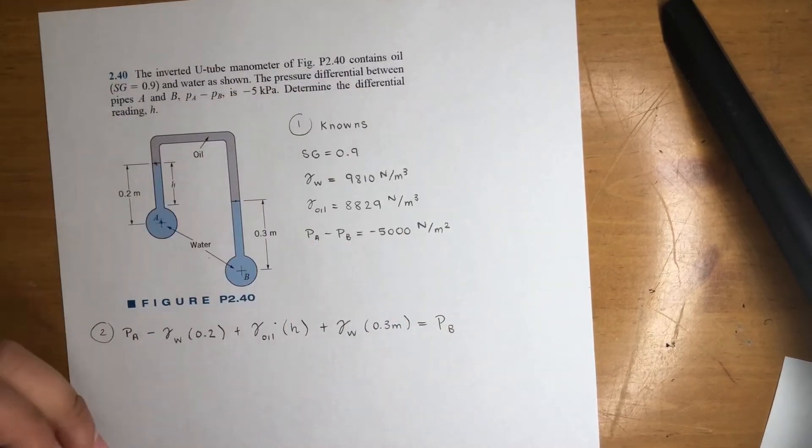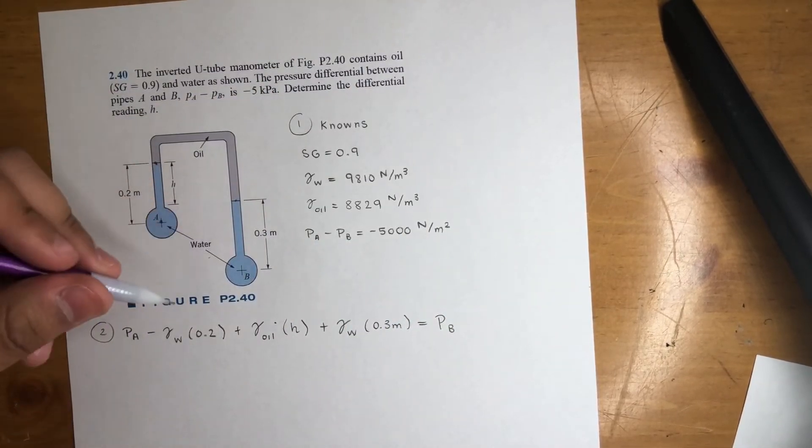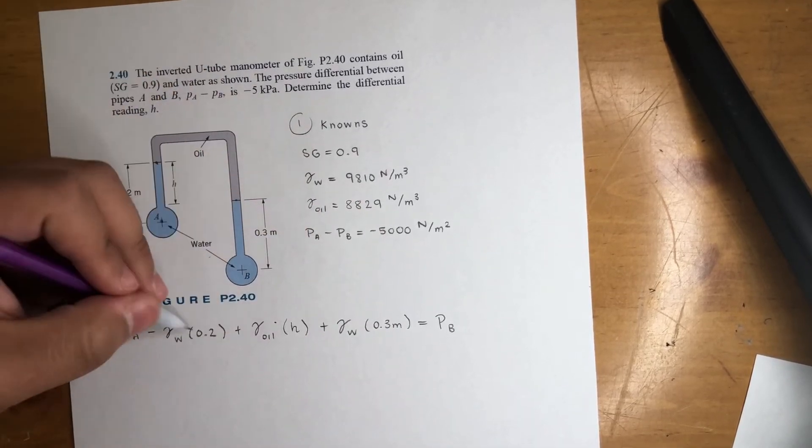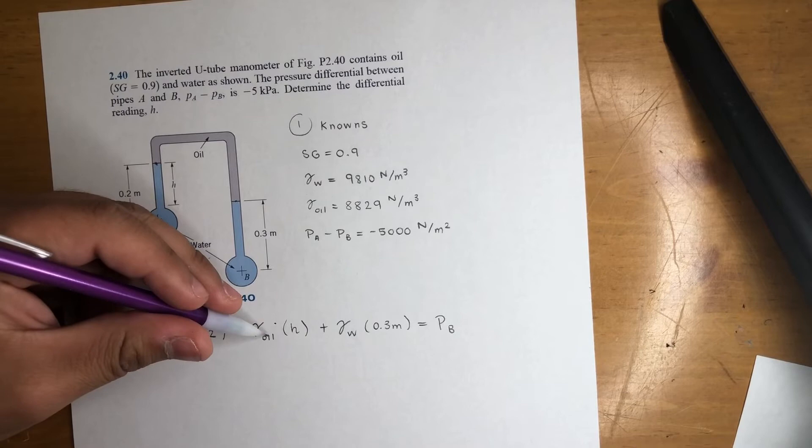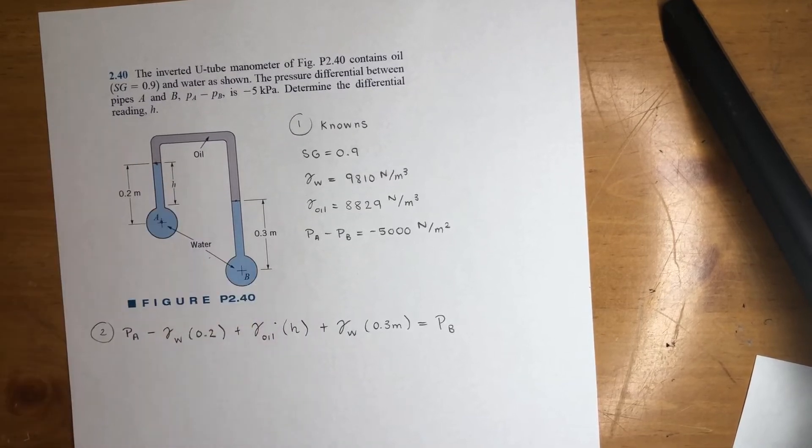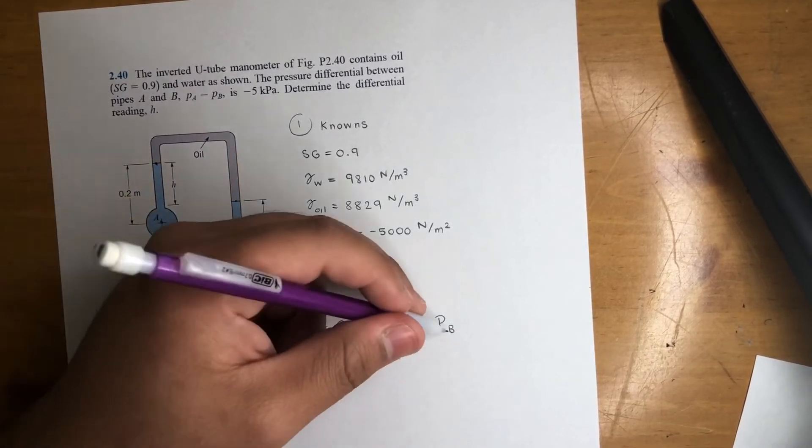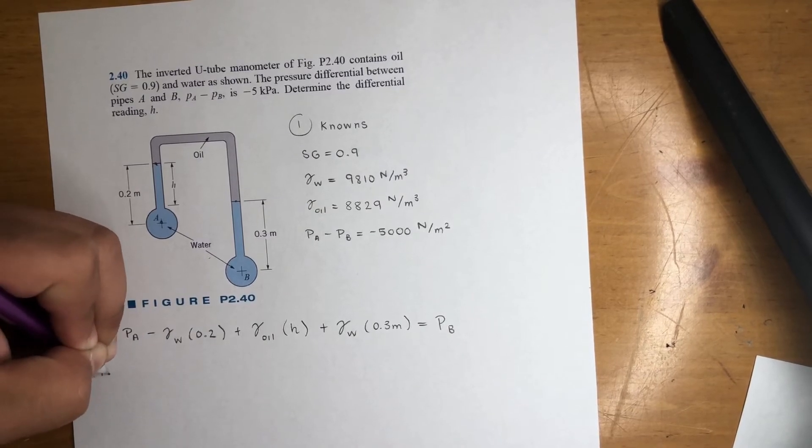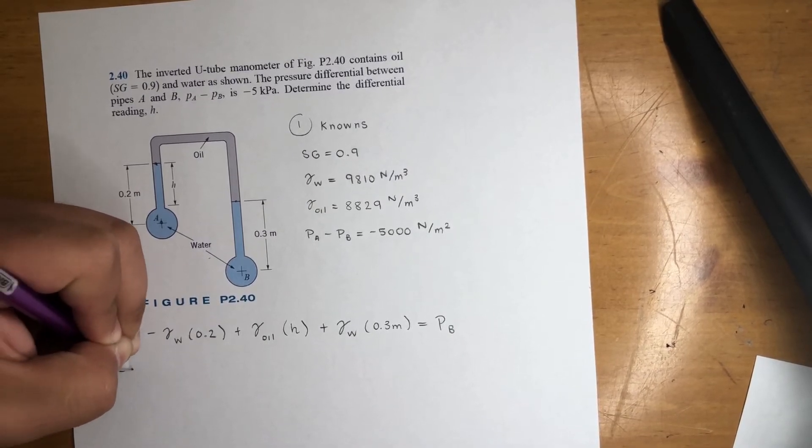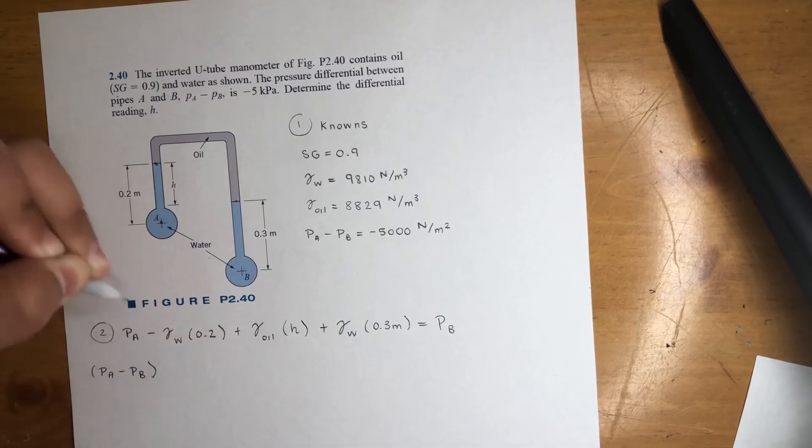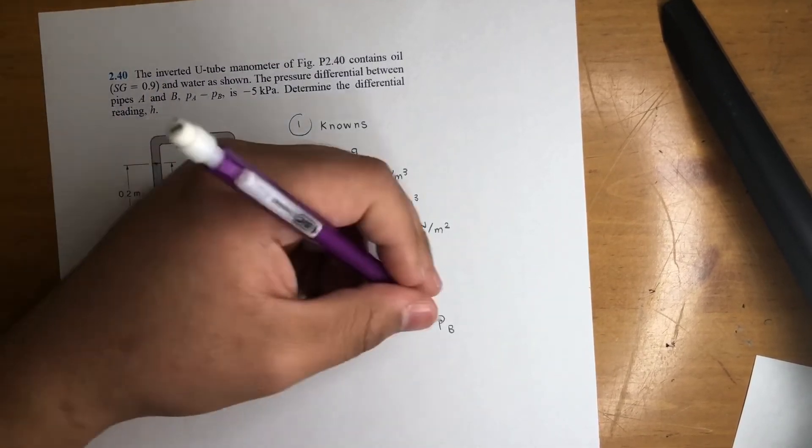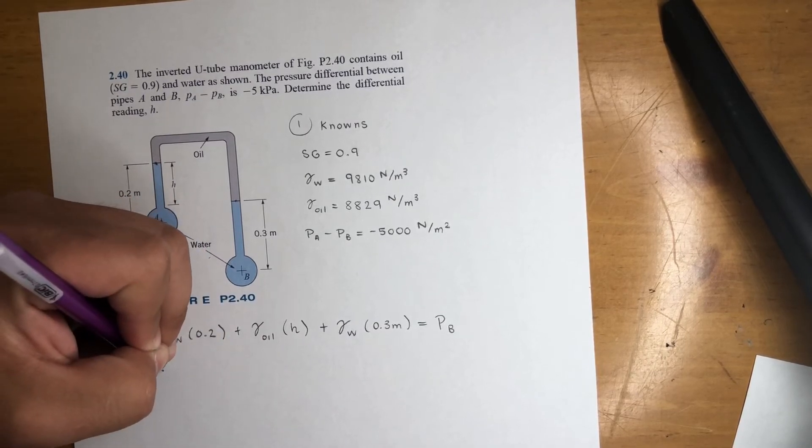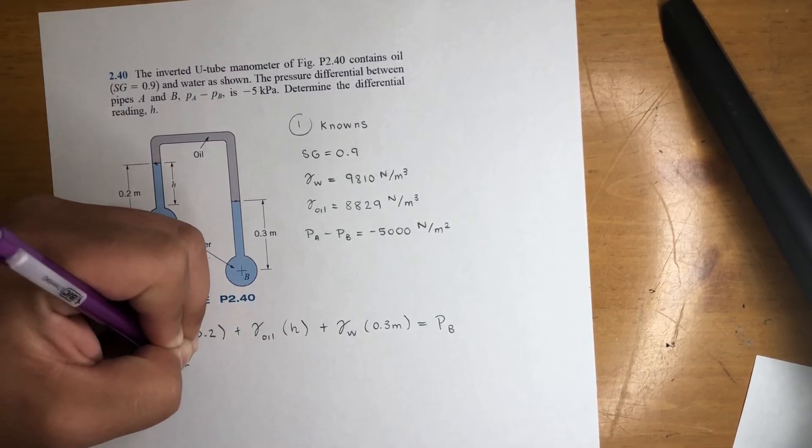So what I'm going to do, we pretty much have every unit except H. We don't have PA or PB, but we got the difference. We got gamma of water, gamma of oil, the heights, except this one, we should be good. So let's move PB over here and let's put it in parentheses to not get confused. PA minus PB, right? That's these two units, minus, let's start plugging in some numbers.